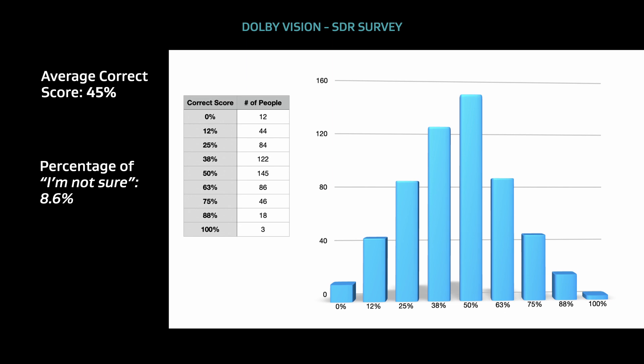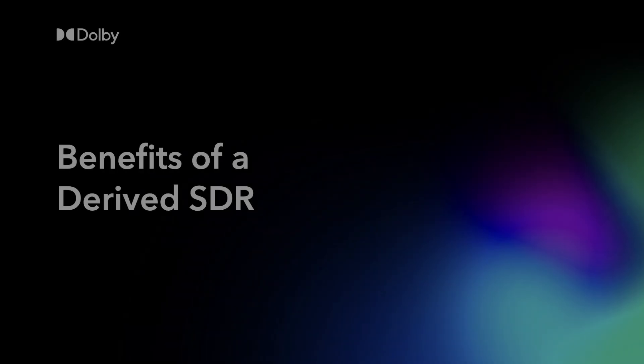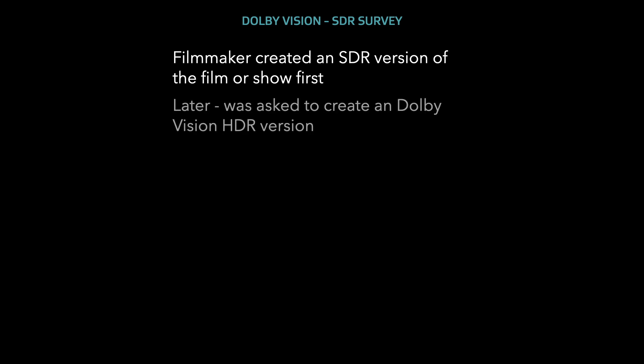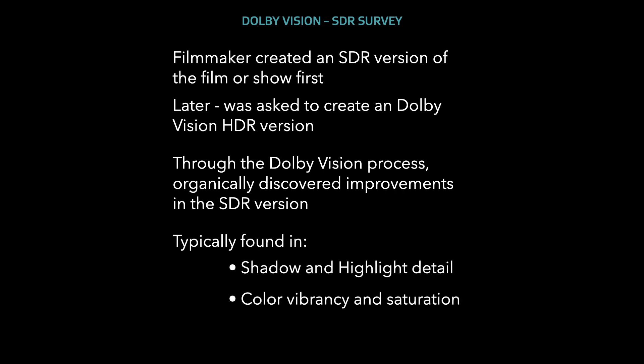Before we revealed each person's score on their iPad, we asked them to pause for a few more minutes to show them the final piece of the demo and then answer two more questions about the overall experience. The final portion of the event focused on other benefits of using Dolby Vision 4.0 to create a derived SDR. We presented several examples where filmmakers had an existing traditional SDR grade first and then later created a Dolby Vision HDR version of their film or show and did the SDR trim pass merely to create metadata. Organically, they perceived a visible improvement in the SDR image, typically in the shadow or highlight detail, as well as color vibrancy in the limited space of SDR Rec. 709. These filmmakers were happy to share their stories and allowed us to present a side-by-side comparison of their manual SDR grade and the derived Dolby Vision SDR version.